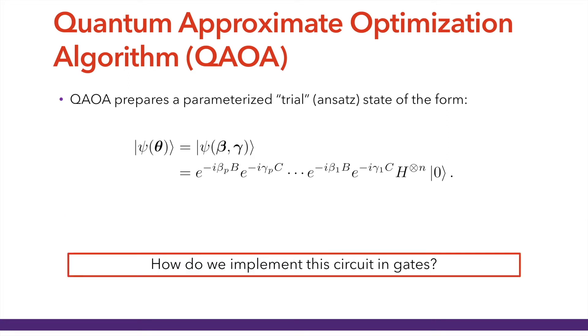There were a couple of results indicating potential for quantum advantage using QAOA, which is quite different from hardware-efficient ansatzes for optimization. There is really no evidence at this point that hardware-efficient ansatzes can achieve any quantum advantage for optimization. But for QAOA, we can at least make arguments for why it is a good ansatz to use. The question is then: how do we implement this circuit in gates? What is exp(−iγC) implemented as gates?